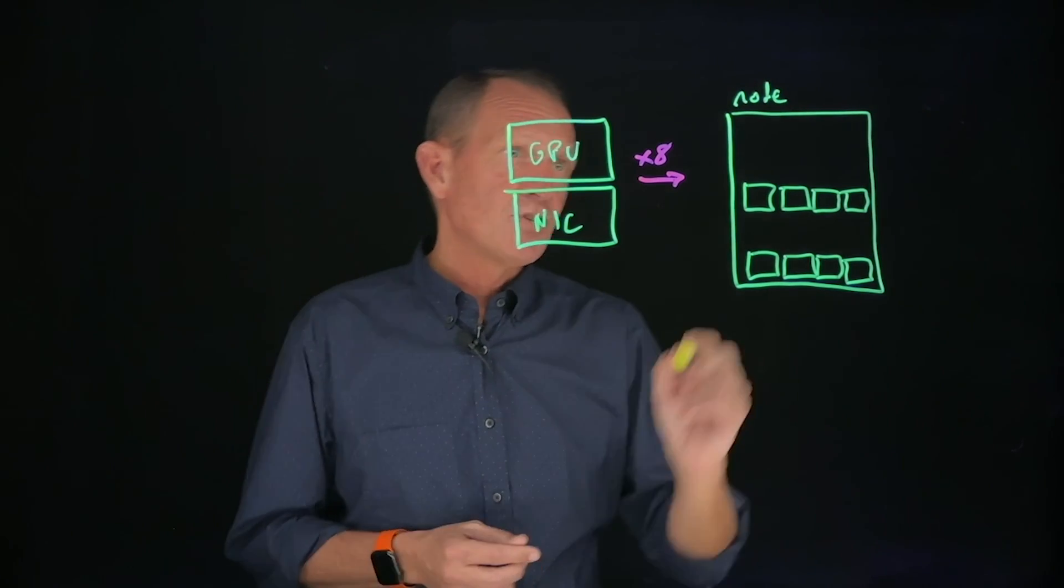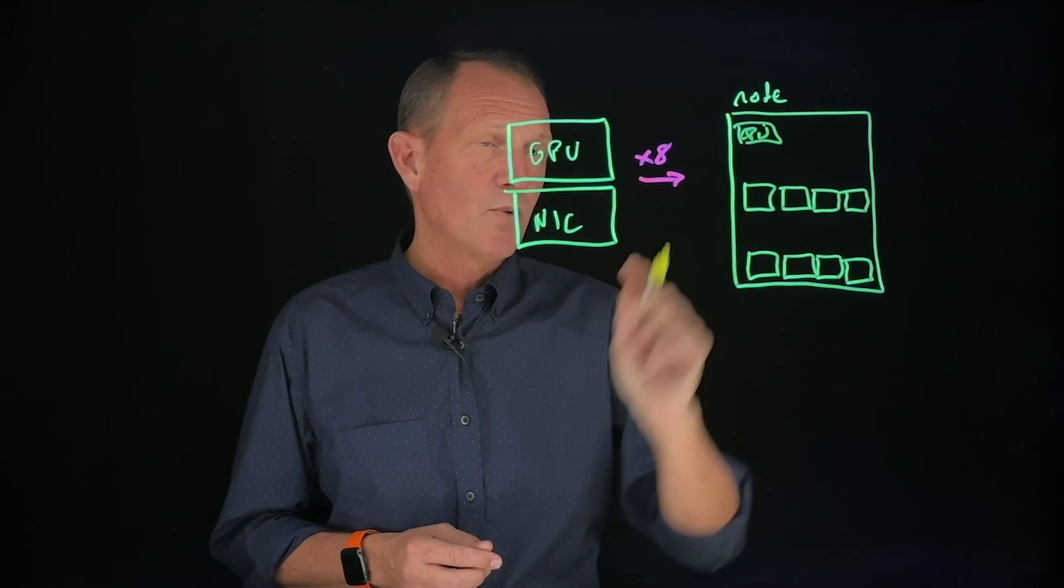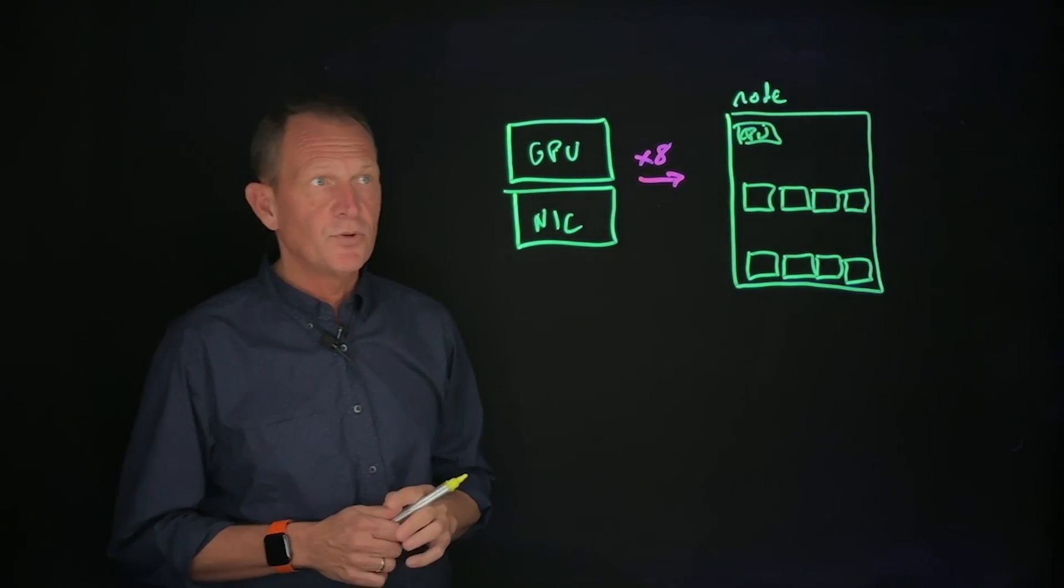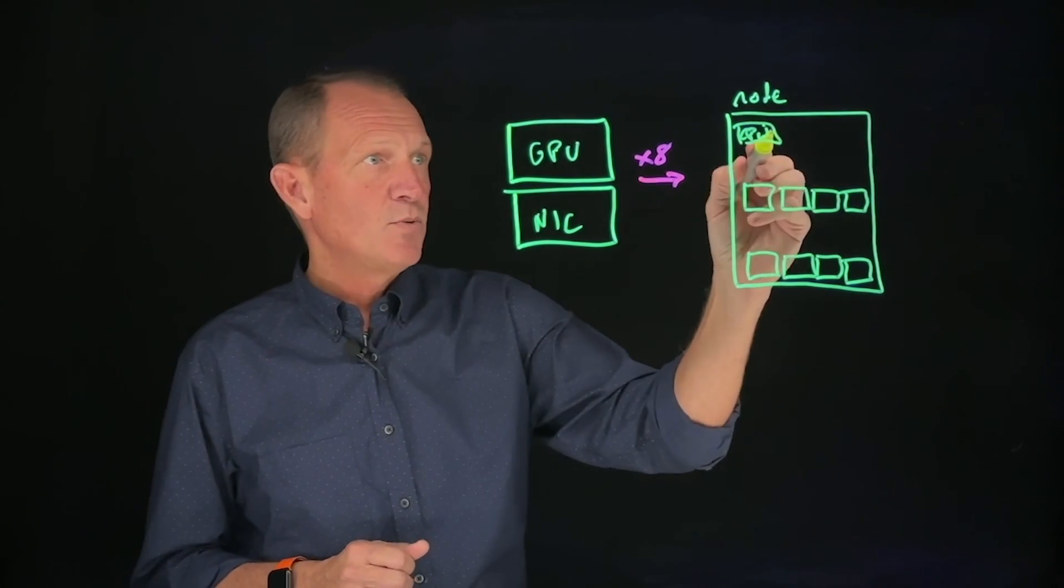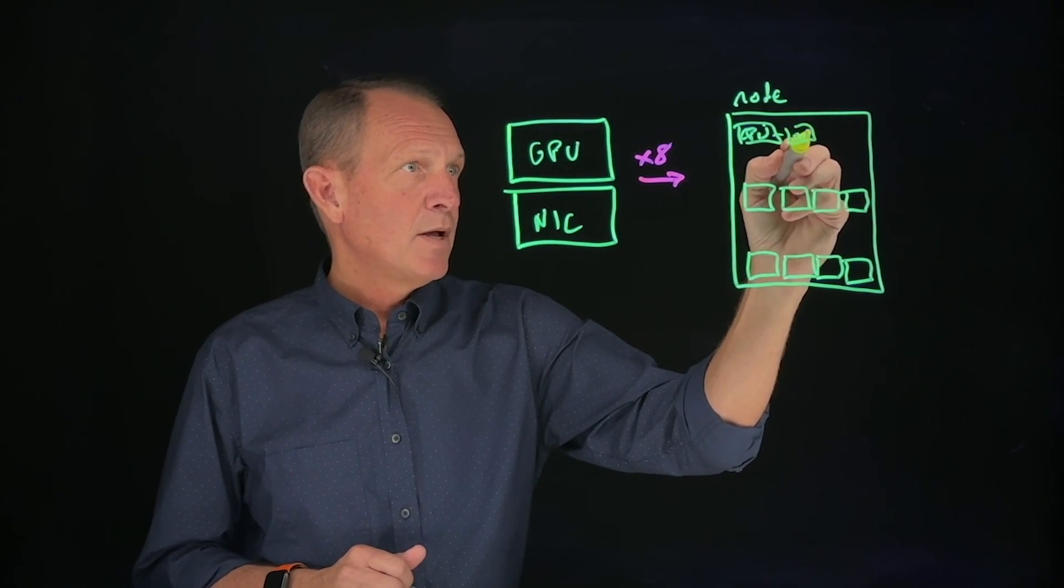What else does a node have? A node has some sort of CPU infrastructure as well so it can do general data processing and load data in and out. That CPU will have memory and probably its own associated NIC card for management.